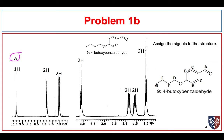We have some symmetry here, so we have two sets of equivalent protons, B and C. They're next to each other and are going to couple with each other, so we expect these to be doublets in the aromatic region. The fact that you can tell they're doublets tells you that you have this aromatic proton pattern.